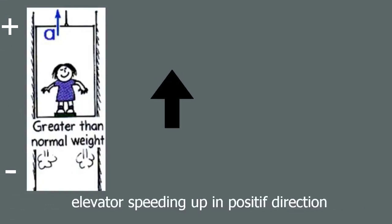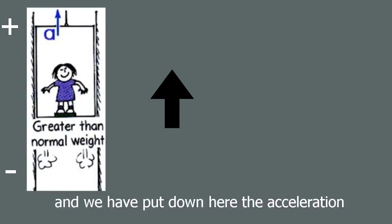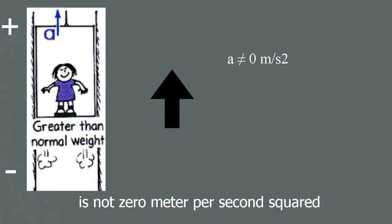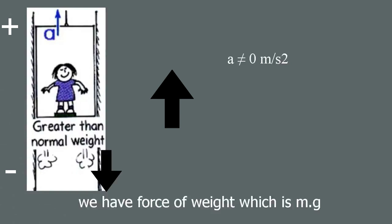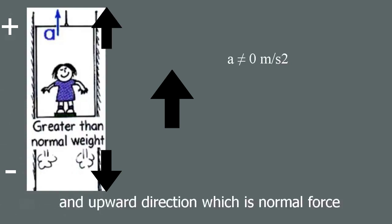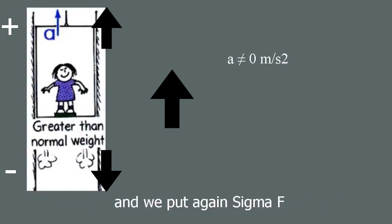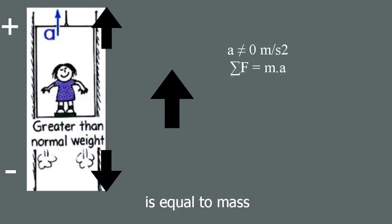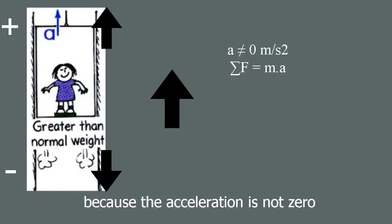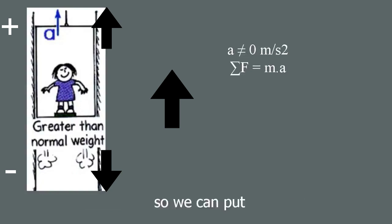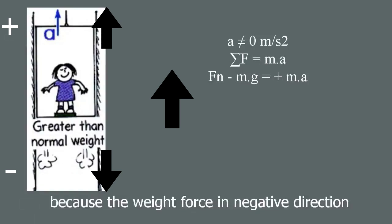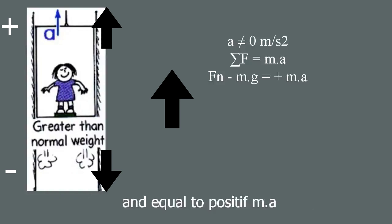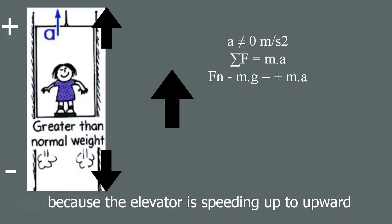The elevator is speeding up in the positive direction and the acceleration is not zero. We draw the forces again: weight force mg downward and normal force upward. Sigma F equals mass times acceleration, so we write: fn minus mg equals positive ma, because the elevator is accelerating upward.